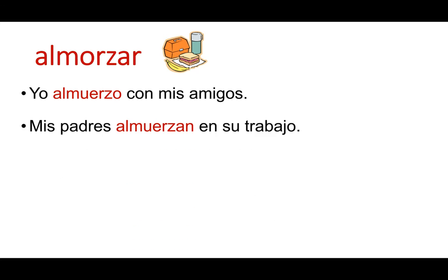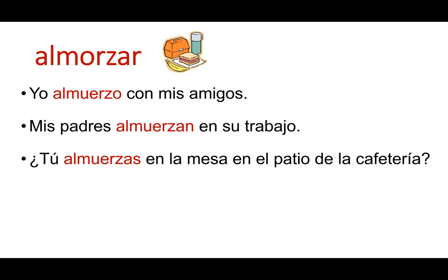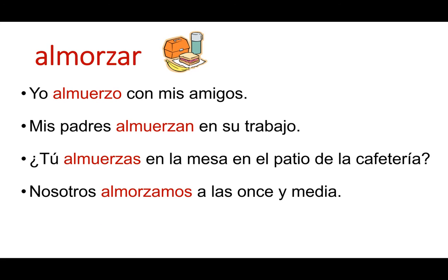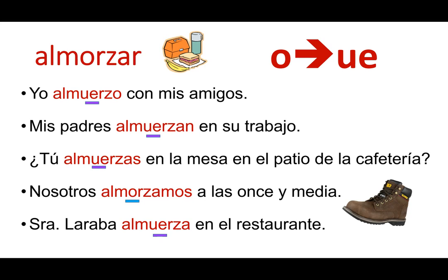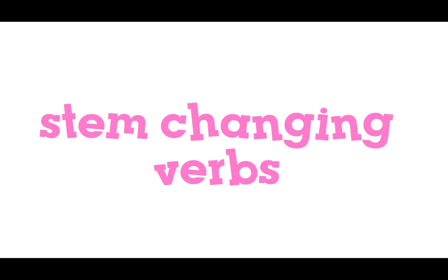Almorzar — to eat lunch. Yo almuerzo con mis amigos. Mis padres almuerzan en su trabajo. Tú almuerzas en la mesa en el patio de la cafetería. Nosotros almorzamos a las once y media. Señora Larraba almuerza en el restaurante. Again, the stem is changing from almor- to almuer- — O to UE — except in the nosotros form, where we go back to the original. So this is also an O to UE stem changer and a boot verb. That was a quick look at the stem changing verbs that follow the same pattern as poder and a few other O to UE stem changers. Gracias.